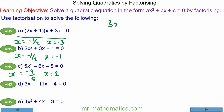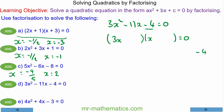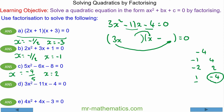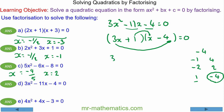For question d, 3x squared minus 11x minus 4 equals 0. We have two brackets with 3x and x. Two numbers that multiply to make negative 4 are: negative 1 and positive 4, negative 2 and positive 2, or 1 and negative 4. One number multiplied by 3 and added to the other must make negative 11. So 3 times negative 4 is negative 12, and negative 12 add 1 makes negative 11. So the brackets are 3x plus 1 and x minus 4 equals 0. Therefore x equals negative one third, or x equals 4.